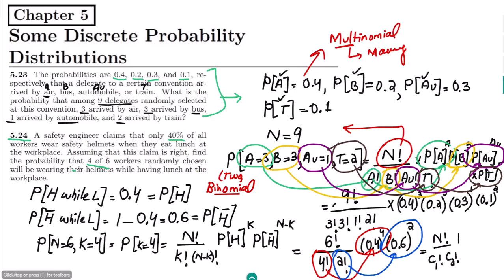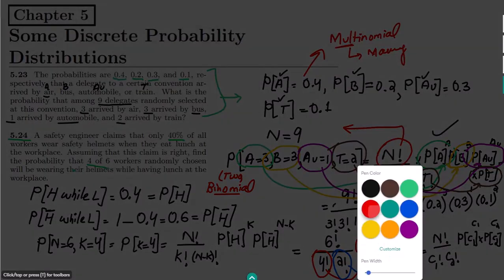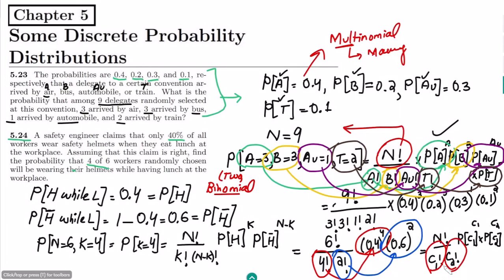This general form — n factorial divided by class 1 factorial times class 2 factorial, multiplied by P(class 1) raised to class 1 power times P(class 2) raised to class 2 power — is similar to the multinomial, but here we only have two classes. This is the key difference between the multinomial and binomial theorem. You can find the answers using a calculator. If you have any questions, ask in the comment box — see you soon.